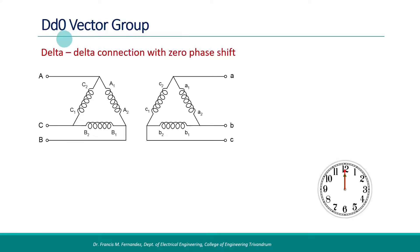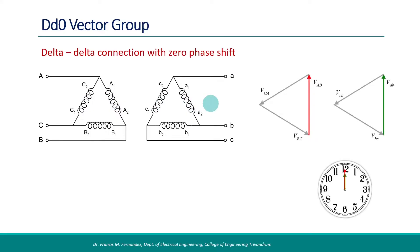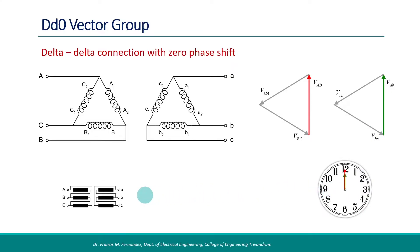The next type is the DD0 vector group. It has a delta-delta connection — both primary and secondary windings are delta connected. In the phasor diagram, line voltages are in phase with the corresponding primary side voltages. The phasor positions of line voltage VAB is considered for phase angle representation, and since there is no phase difference between the primary and the secondary, the clock position corresponds to zero hours. We can have the simplified connection diagram and also the displacement diagram.